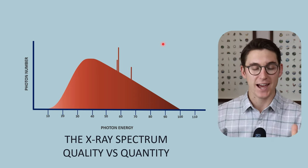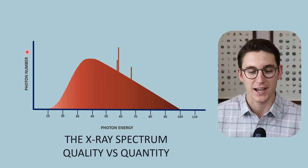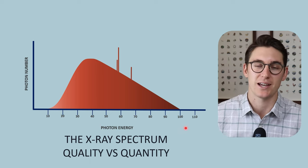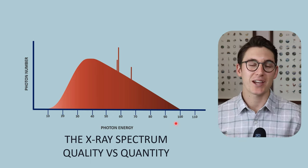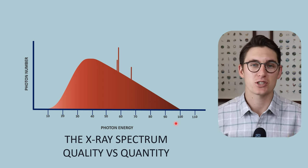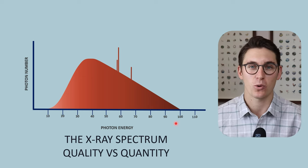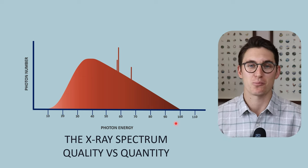Now there are two separate axes to this graph: the first being photon number here on our Y axis, and the second being photon energy on our X axis. When we look at the X-ray spectrum, we often refer to it as having two separate properties: the first being quality and the second being quantity, both of which I want to cover briefly today.